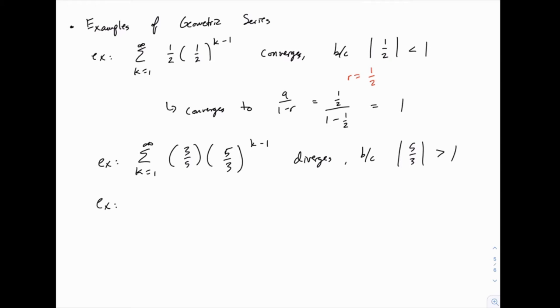Another example: you may see some that aren't written in that standard form. Here's an example of a series that's written not in the standard geometric form, but it turns out that it is equal to a geometric series. The series 5 to the power of negative 3k. Now how do you recognize that?